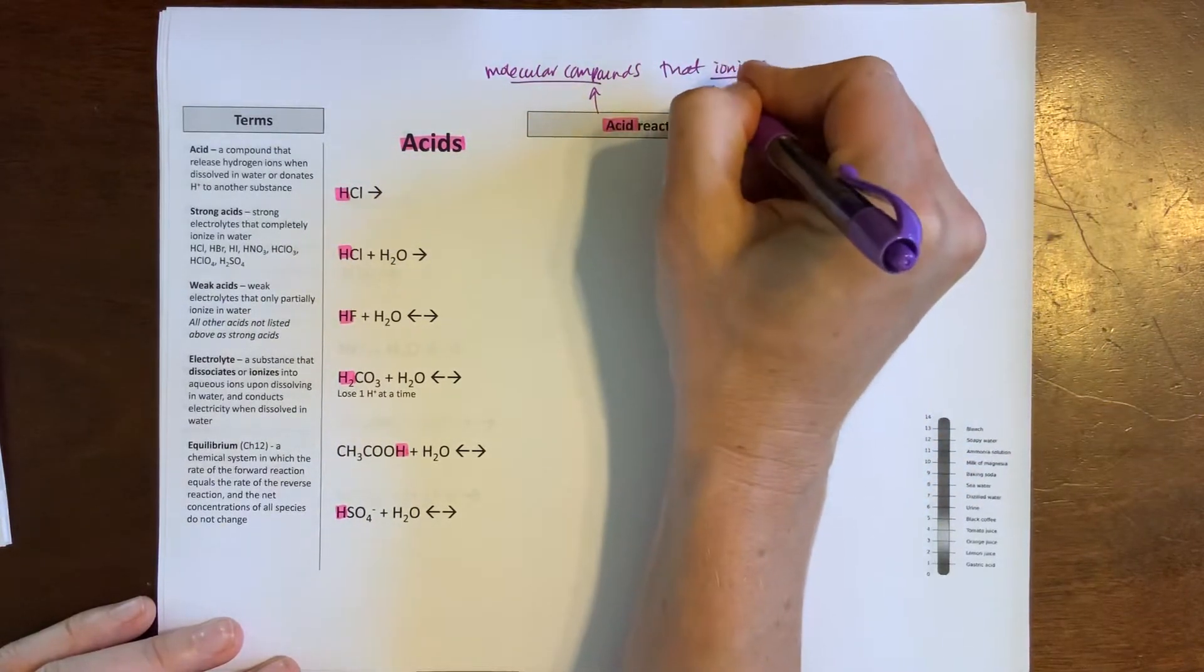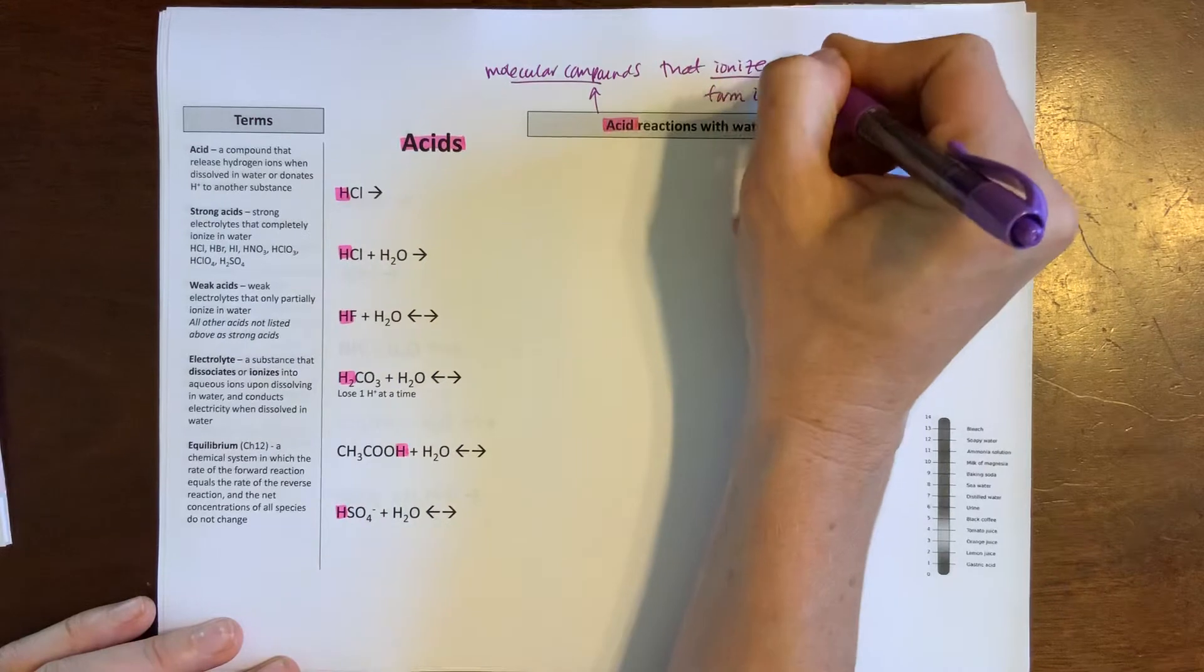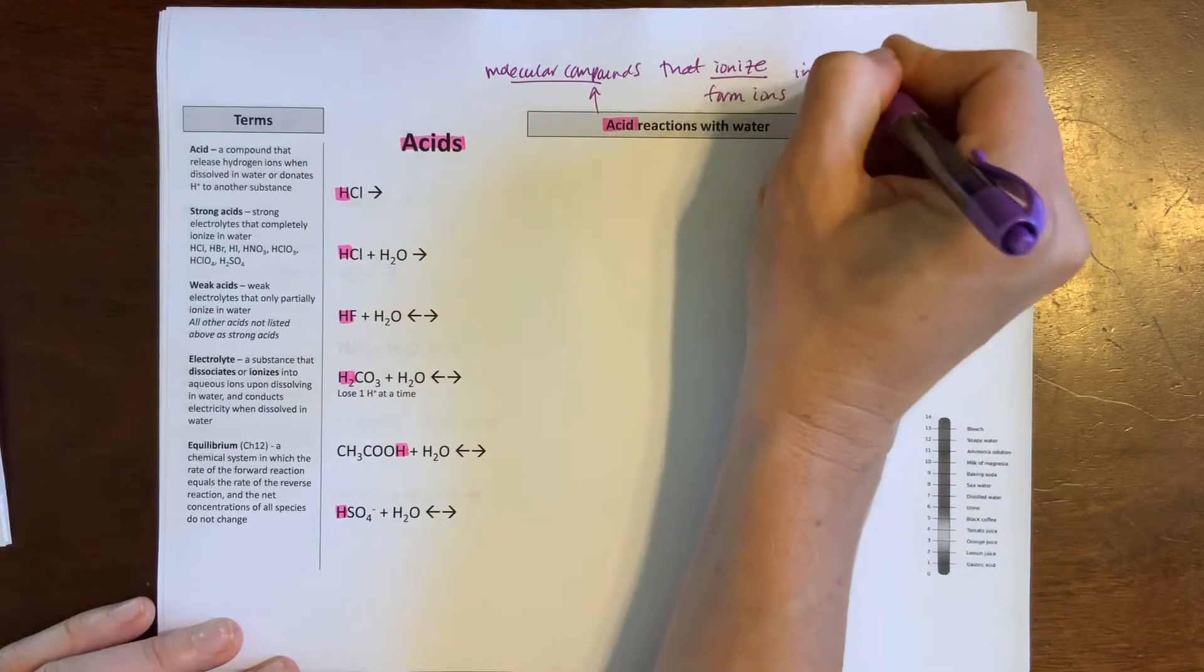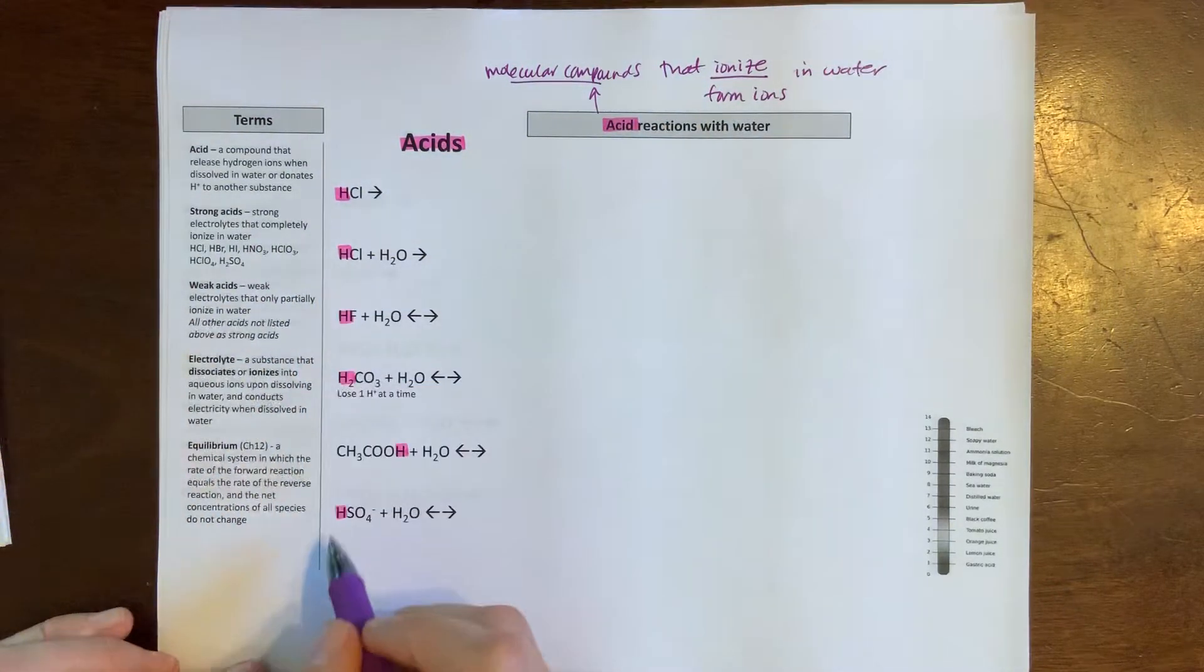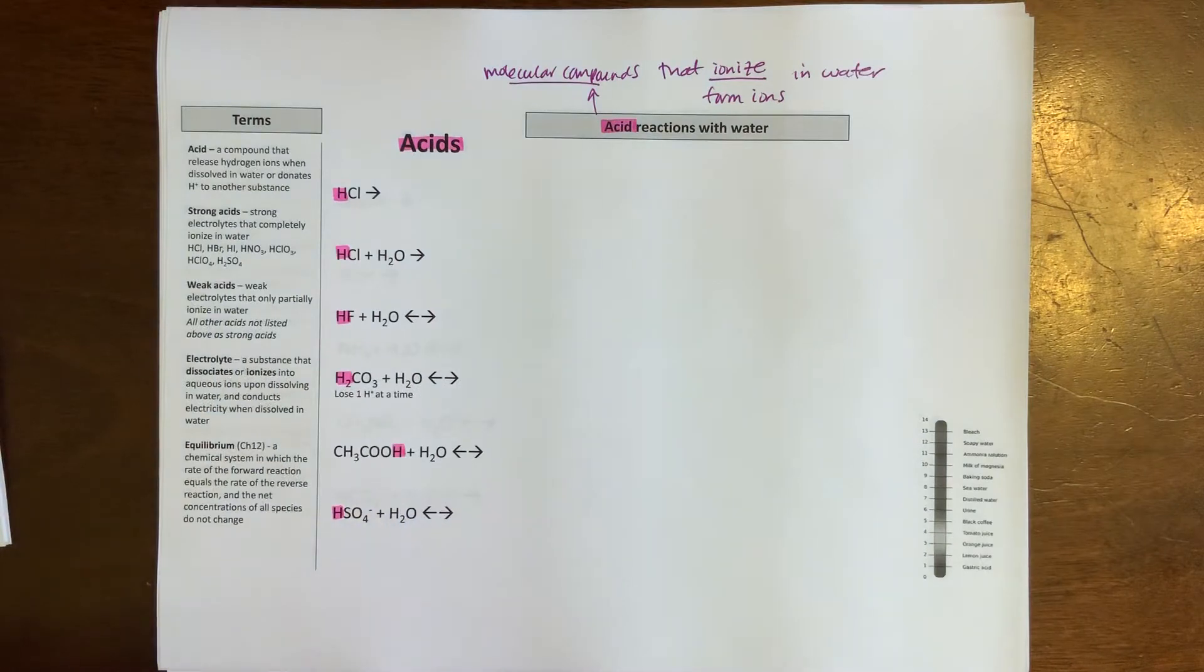Ionize means form ions in water. So once I take all these compounds and drop them into water, I'm going to get some aqueous ions. We want to be able to write and predict what the products are of these reactions.